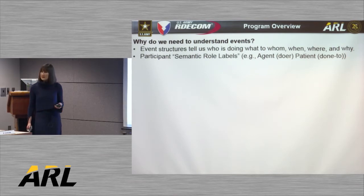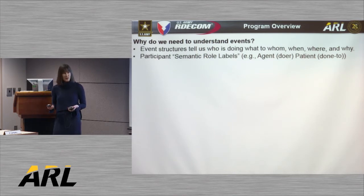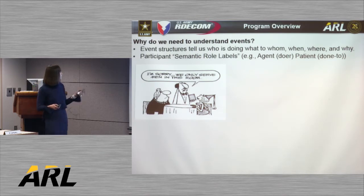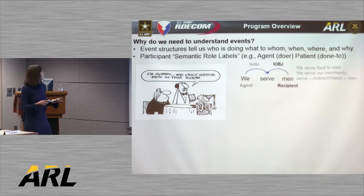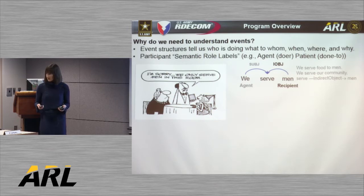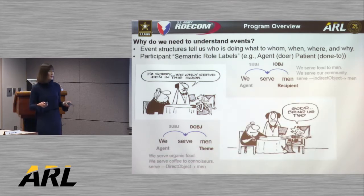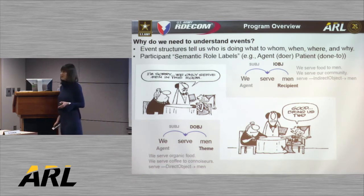You might ask why we really need manually annotated semantic roles, especially in English — can we do this automatically, given that the subject is usually the doer and the direct object after the verb is usually the done-to? Although this is the dominant pattern, we see a wide variety of exceptions, like in this comic where the waiter says 'we only serve men in this room.' The intended meaning is that men are the recipient, but the ladies interpret men as the direct object and respond 'bring us two.' Semantic role labels like recipient and theme help our automatic systems disambiguate these two possibilities.